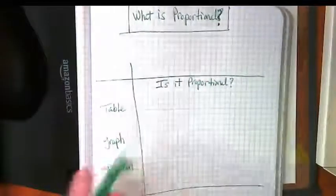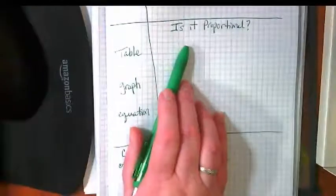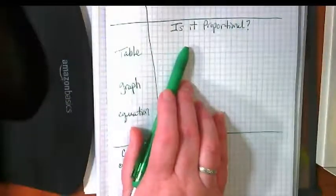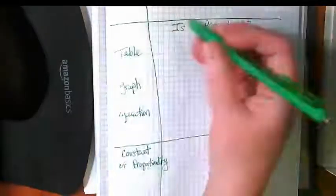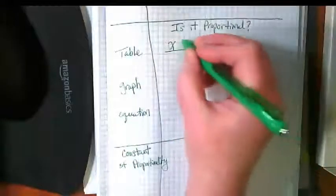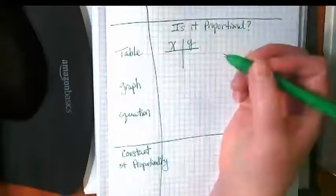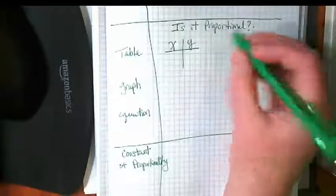As we are answering the question what is proportional, we are reviewing things from the past and we're looking at the question is it proportional? We're looking for a yes or no from a table, graph, or equation. As I watched our vocabulary video, I noted XY tables are a way to check.